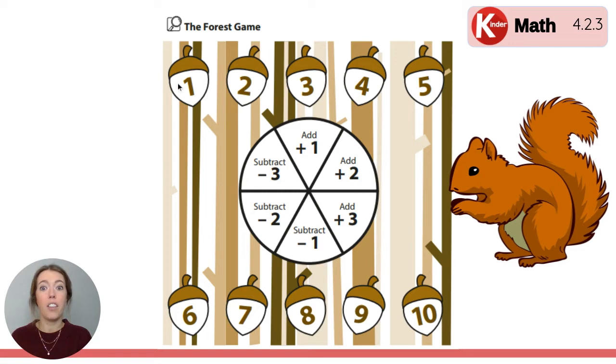Here you can see some acorns at the top. Right here they're numbered 1, 2, 3, 4, 5, and along the bottom, 6, 7, 8, 9, 10.